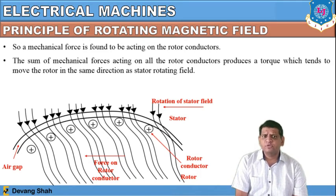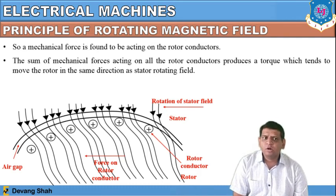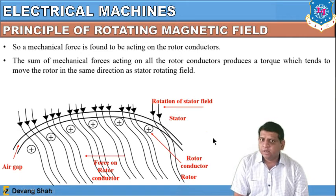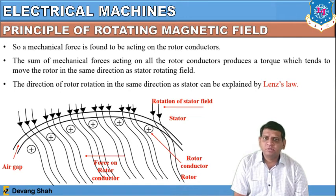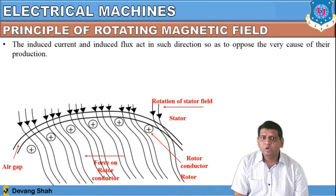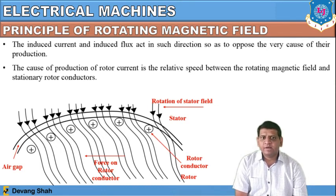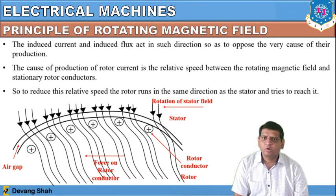The sum of mechanical forces acting on all rotor conductors produces a torque which tends to move the rotor in the same direction as the stator rotating field. Each conductor carrying current exerts a force, and that collective force constitutes the torque. The direction of rotor rotation in the same direction as the stator field can be explained by Lenz's law: the induced current and induced flux act in such a direction as to oppose the very cause of their production. The cause is the relative speed between the rotating magnetic field and the stationary rotor conductor, so the rotor runs in the same direction as the stator field to reduce this relative speed.